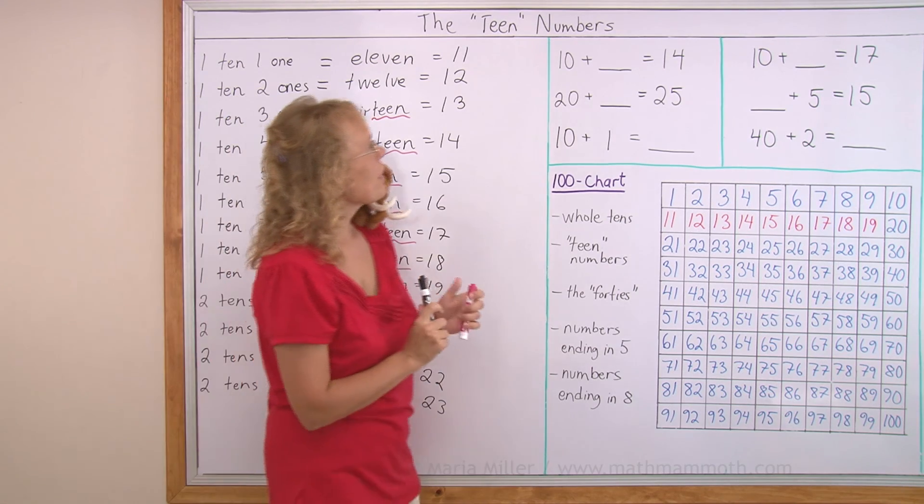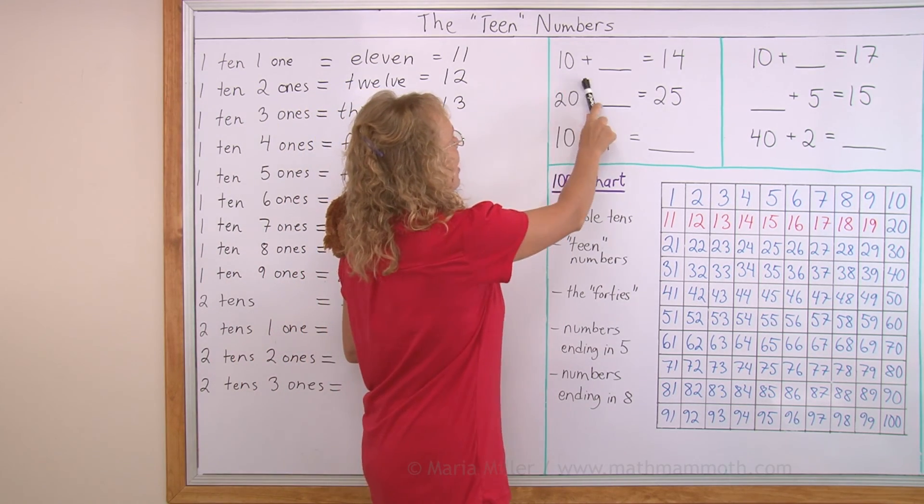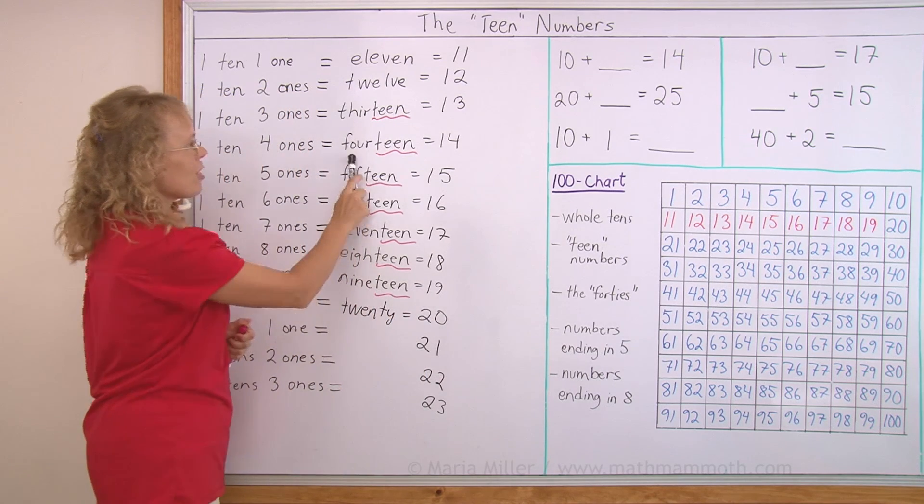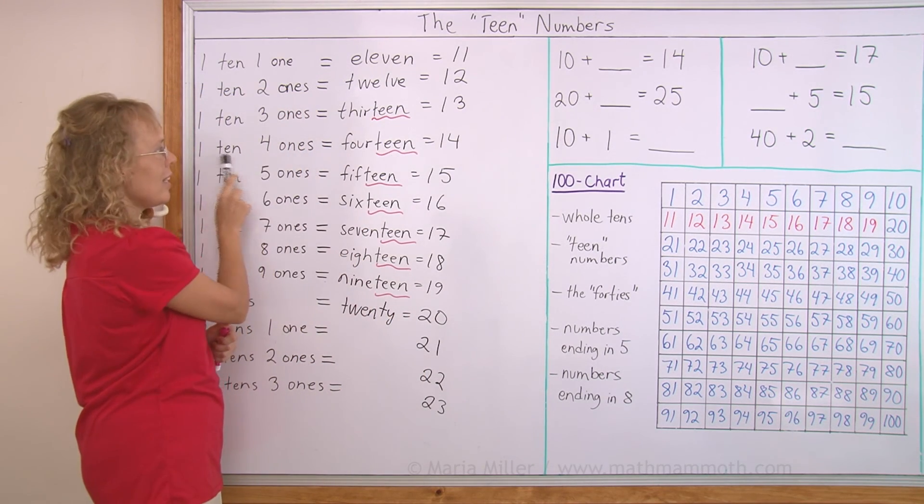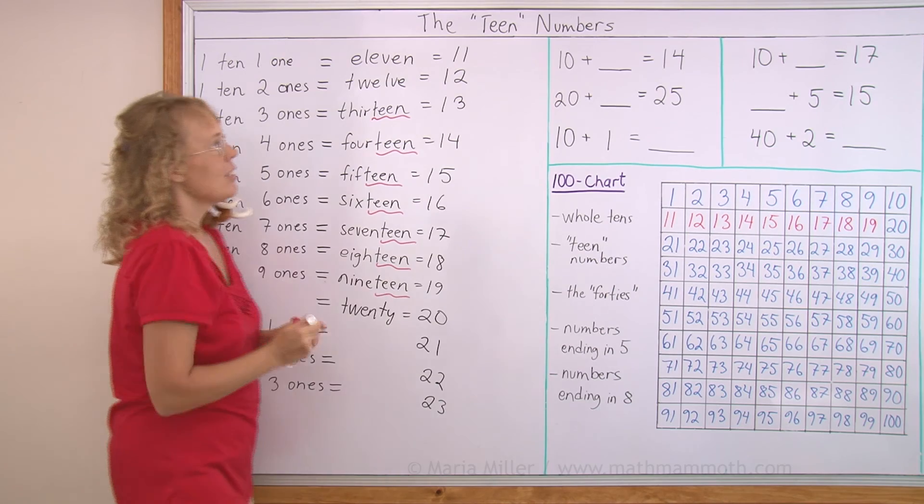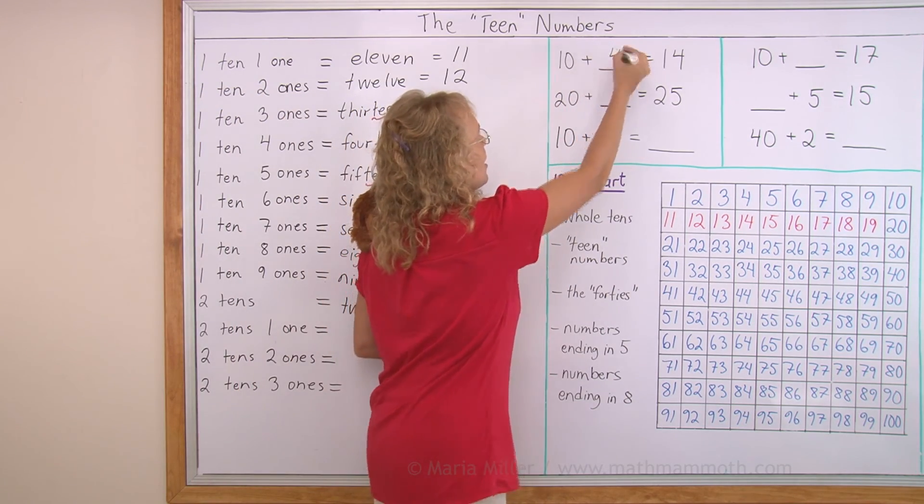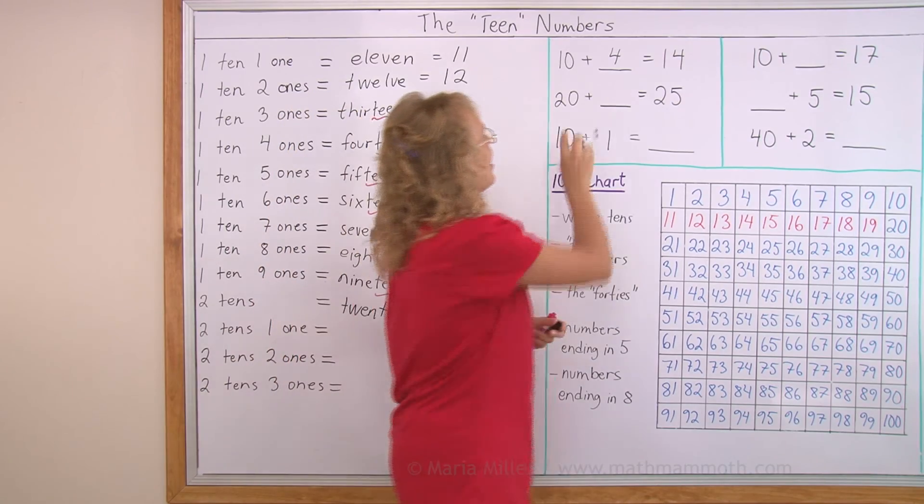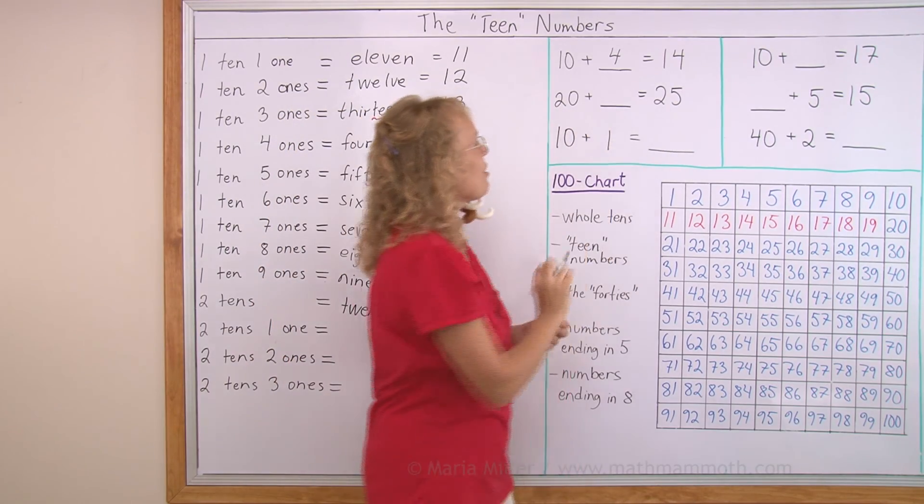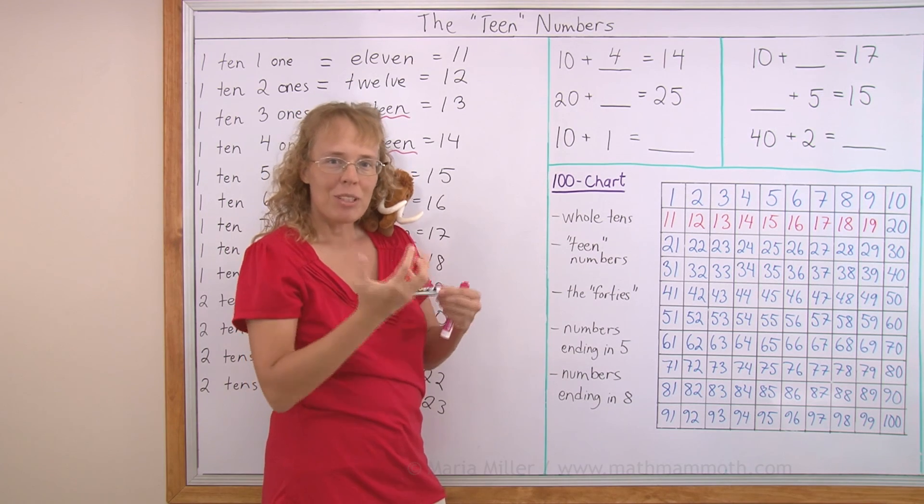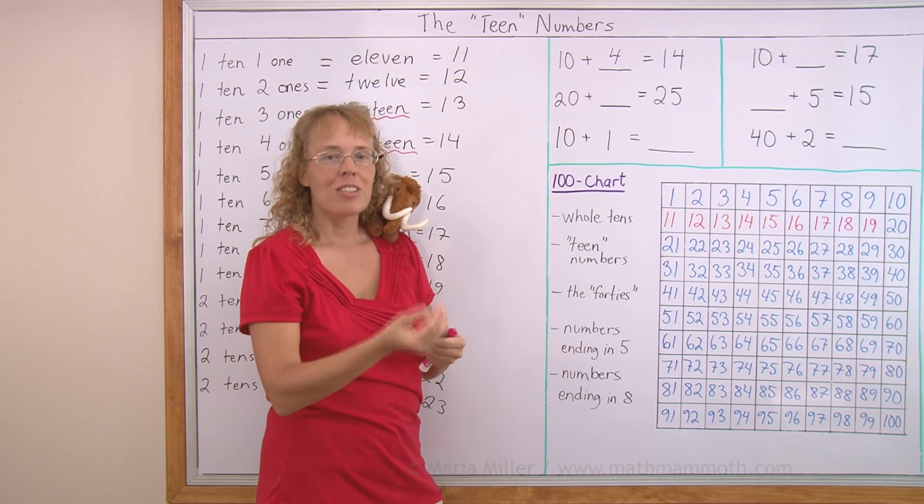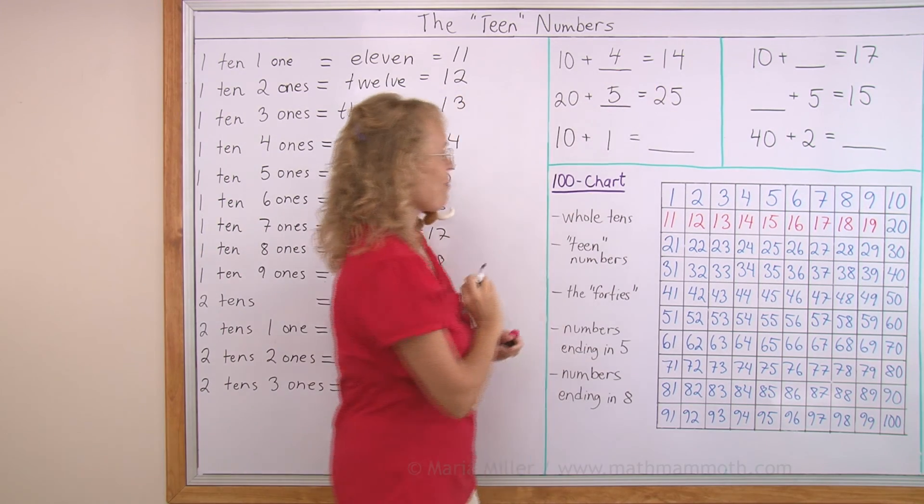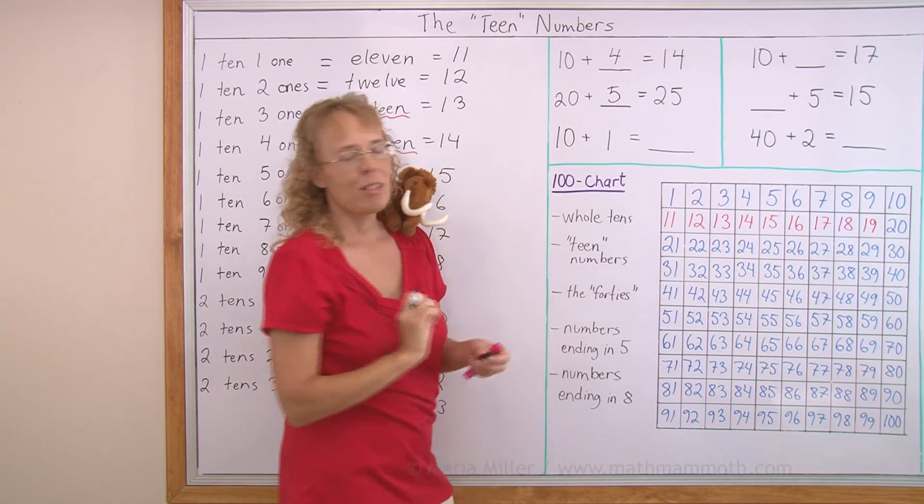Now let's practice here a little bit. 10 plus how many more makes 14? Okay, 14 means 1 ten and 4, so we have 1 ten, so we add 4. 10 and 4 is 14. Now 20 plus how many makes 25? Well that's pretty easy. 25 tells you there's 20 and 5. So 20 and 5 makes 25.